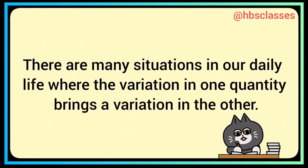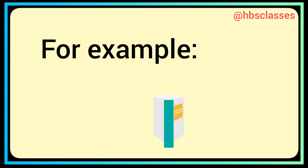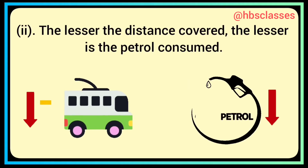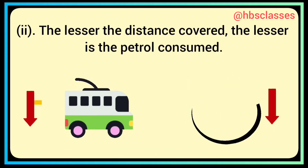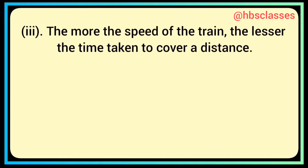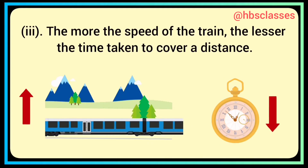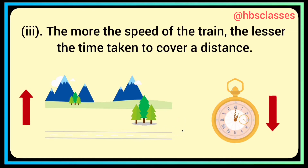There are many situations in our daily life where the variation in one quantity brings a variation in the other. For example, more the number of articles, the more is the cost. The lesser the distance covered, the lesser is the petrol consumed. The more the speed of a train, the lesser is the time taken to cover a distance.